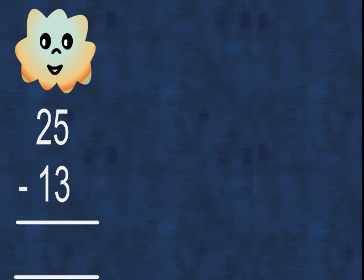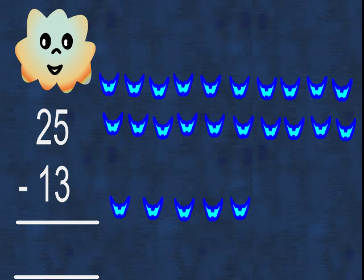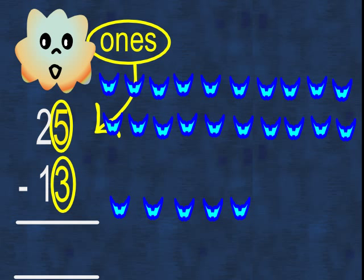Here are 25 birds to help us see what happens in subtraction. We always start at the ones column to take away, so five birds take away three birds equals two birds.